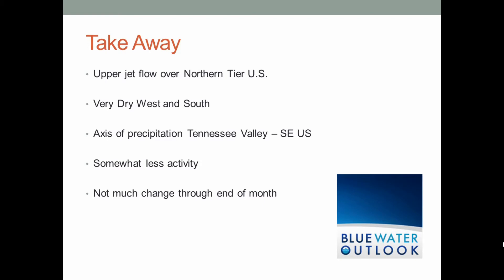The takeaway points from this week's briefing: the upper jet flow will remain over the northern tier of the US; the regime of high pressure over the south will continue; it will be very dry over the western US and the south; the axis of most likely precipitation will extend from the Tennessee Valley into the southeast US. Overall, there will be somewhat less activity this week than last week, especially over the northern tier. This pattern is not going to change much, though mesoscale features could develop and produce heavy rain. Thank you for listening — I'll be talking with you again next week.